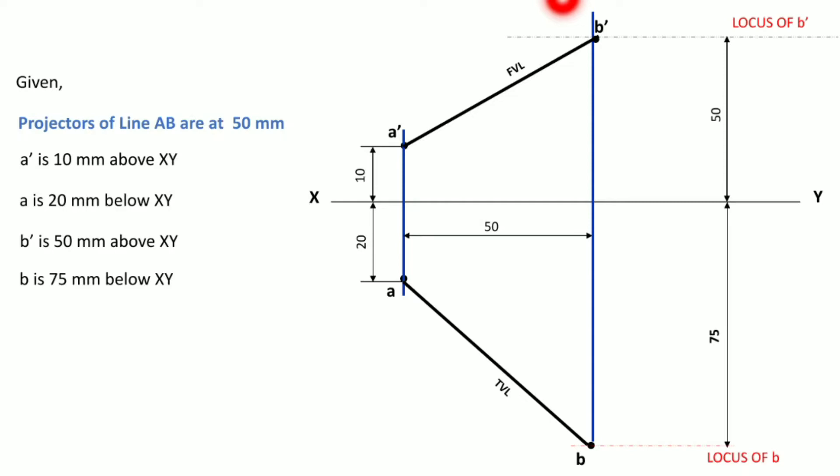We have been asked to draw the projection and get the true length and true inclination with respect to both the planes. Now, to get the inclination with both the planes, we must mark the true length first.